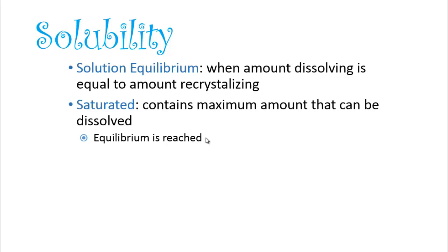One type of solution can be a saturated solution. In a saturated solution, it contains the maximum amount that can be dissolved. Of course, the solute is in the solvent. When we get a saturated solution, we have achieved equilibrium. If we added any more, it's just going to fall to the bottom and it's not going to dissolve because this equilibrium has been reached.